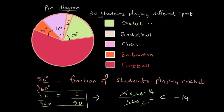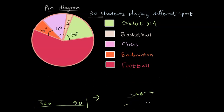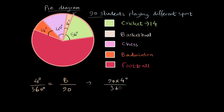Therefore, 14 students play cricket. Now let's solve for the remaining sports. For basketball, the central angle of that sector is 4 degrees. So 4/360 = B/90. Multiplying both sides by 90 gives B = 90 × 4 / 360, which equals 1. So only one student plays basketball.